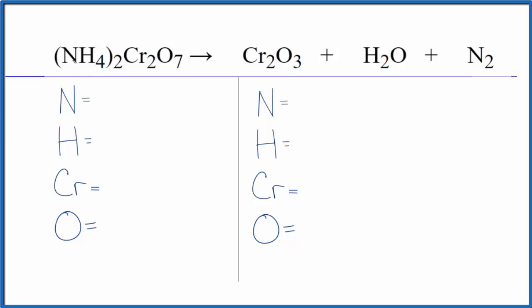Two applies to everything. So we have two times one, two nitrogens; two times four, so eight hydrogens; two chromium atoms and seven oxygens. On the product side we have two nitrogen atoms, two hydrogen atoms, two chromium and...